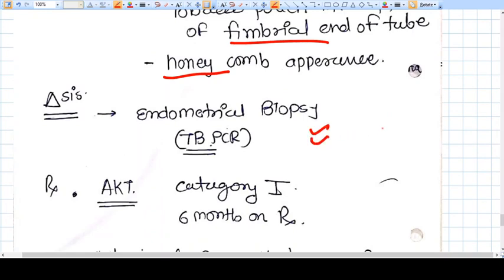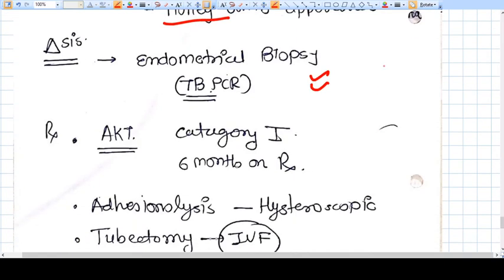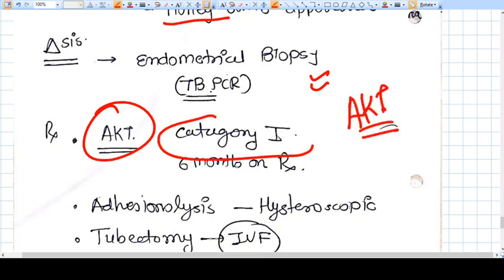How do you diagnose? You do the endometrial biopsy, you send it for culture and nucleic acid test, that is PCR. If you find something wrong, if you find the disease, the treatment is as usual as other places of TB, like anti-Koch's treatment.